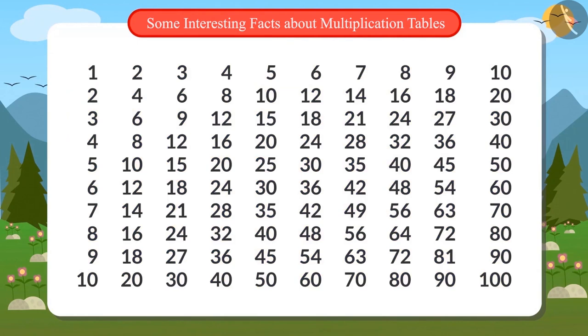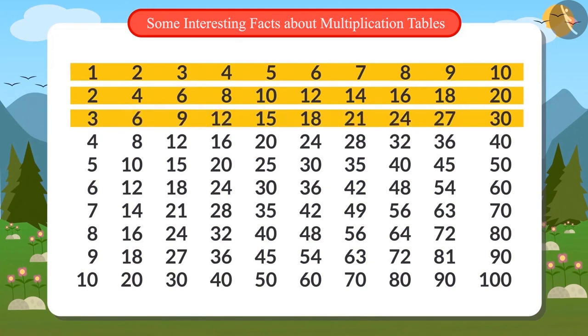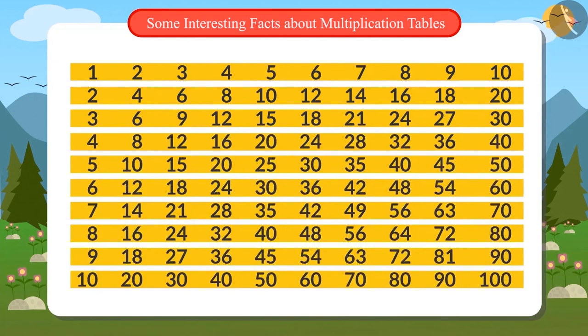The first line shows the table of 1. The second shows that of 2, and the third of 3. So whichever line you read from left to right becomes the table of that number.